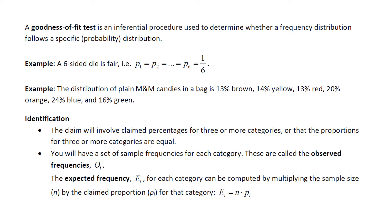Also, we could test that the distribution of plain M&M candies in a bag is 13% brown, 14% yellow, 13% red, 20% orange, 24% blue, and 16% green. The claims here are one of two types typically: that all the proportions are equal, or we have claims made about three or more percentages.